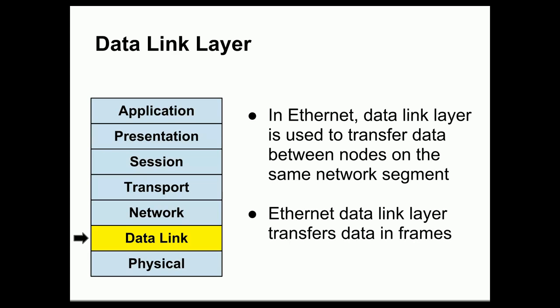We often discuss the data link layer in terms of Ethernet systems. In Ethernet, the data link layer is used to transmit data between nodes on the same network segment — from one node on the same network switch or segment to another node, which can then transmit a reply back. In Ethernet and many data link layer implementations, data are transferred in what are called frames, which are logical units of data of a given size, typically a fixed size.